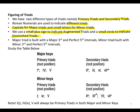A major triad is built on a major third and a perfect fifth interval. A minor triad is built on a minor third and a perfect fifth interval. Let us study the table. In major keys, primary triads are 1, 4, and 5 — and they are all major.